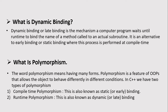What is dynamic binding? Dynamic binding, also called late binding, is the mechanism where a computer program waits until run time to bind the name of the method called to the actual subroutine. It is an alternative to early binding or static binding.